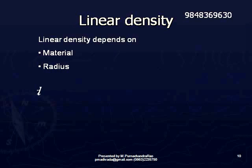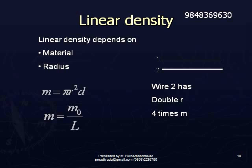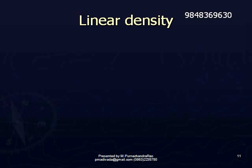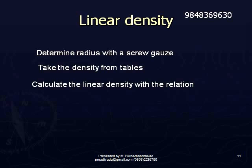Linear density is mass per unit length. It depends on the material of the wire and the radius of the wire. We can determine the linear density by two methods. One relation is M = πr²d, where r is radius and d is density of the material of the wire. By taking a screw gauge, we can determine the radius, and the density of the material can be taken from the tables, thereby calculating linear density from πr²d.